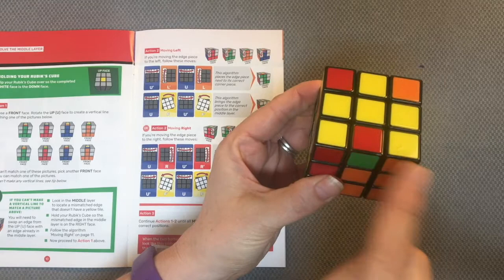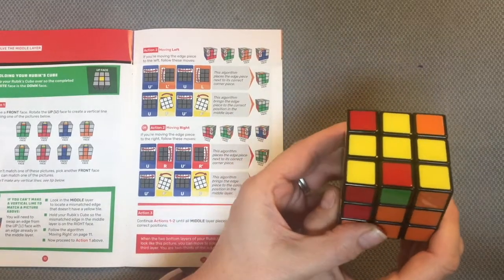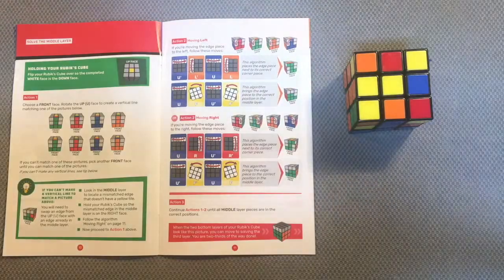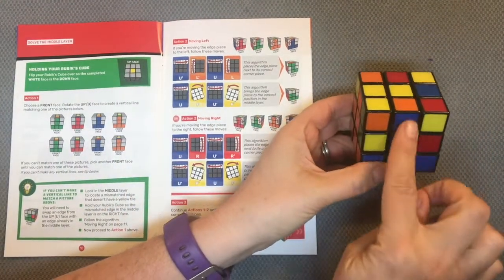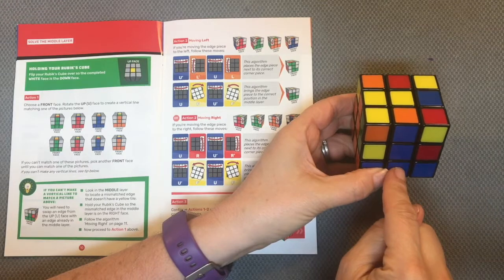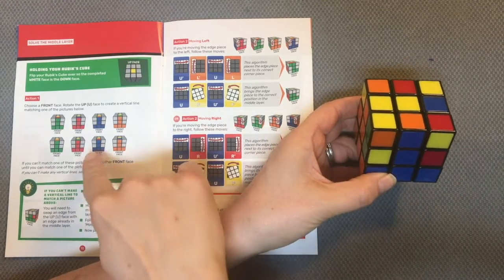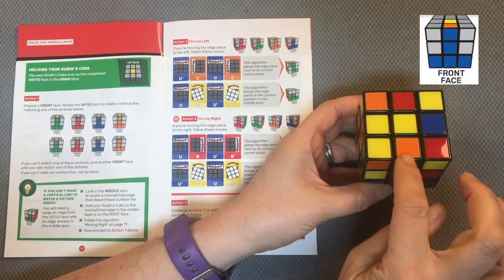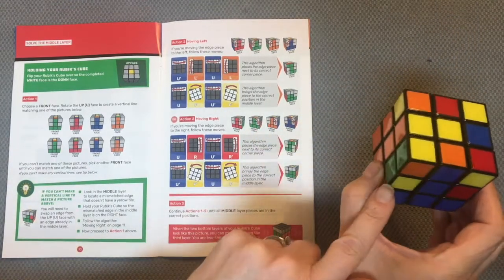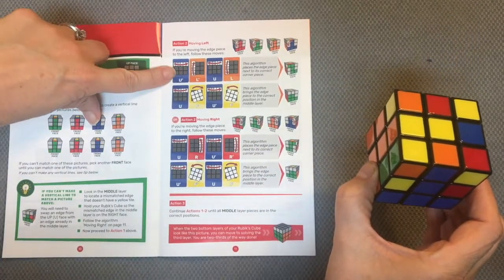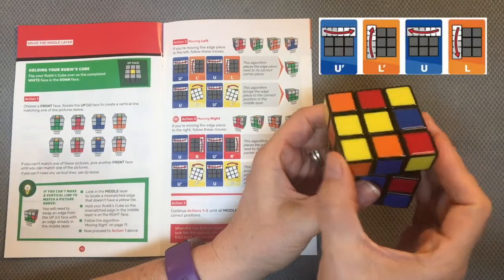I continue this process until I have solved the middle layer. So here I have another example where I have the blue all in order, the front face here, and I have the orange one on top. Because the orange is the left face, I need to move this edge piece to the left. I will follow this top algorithm.